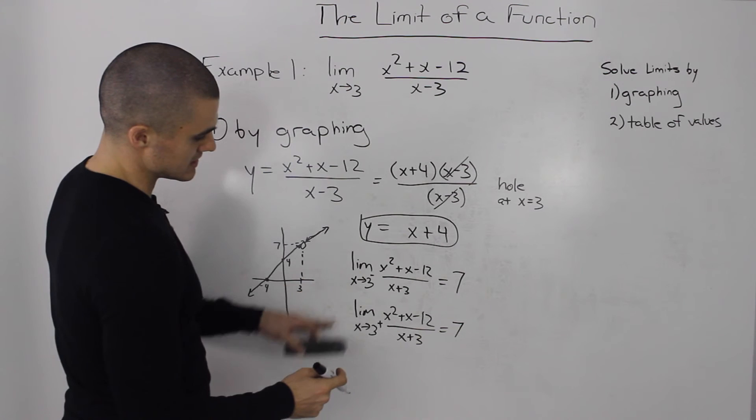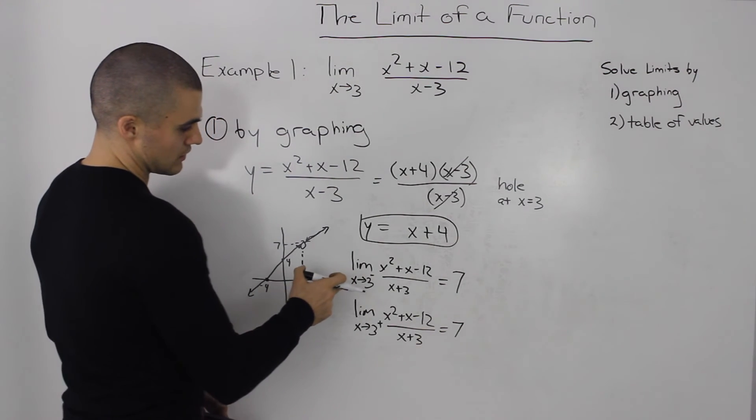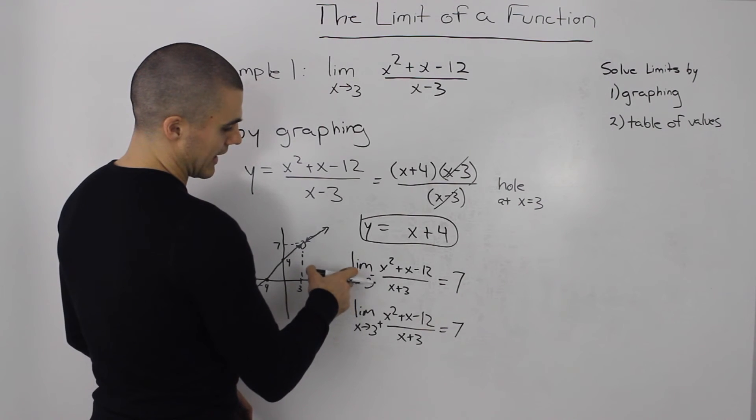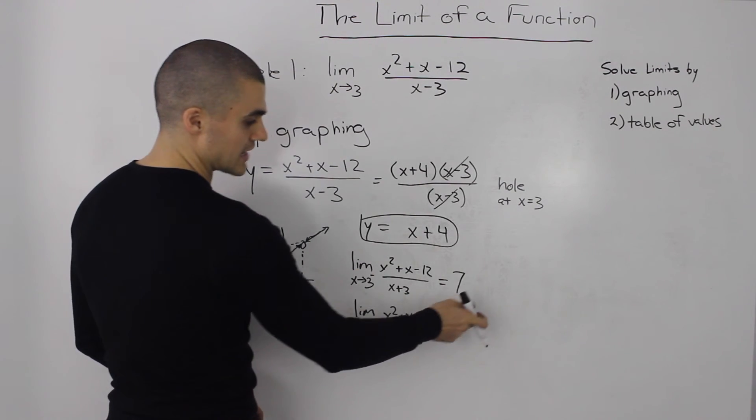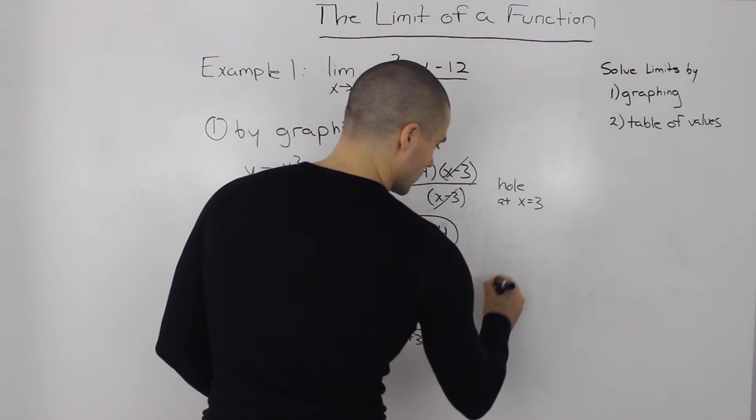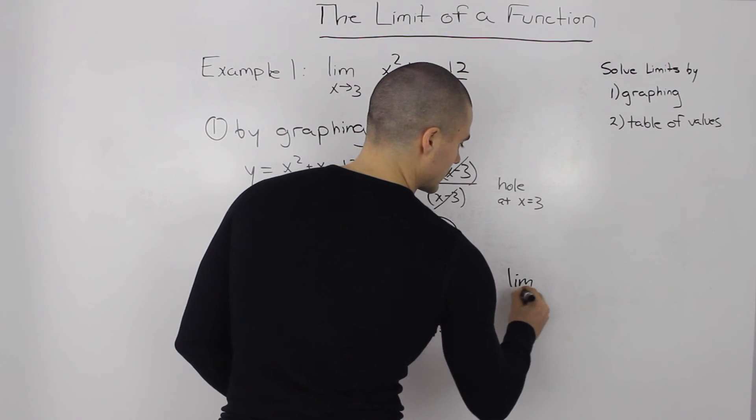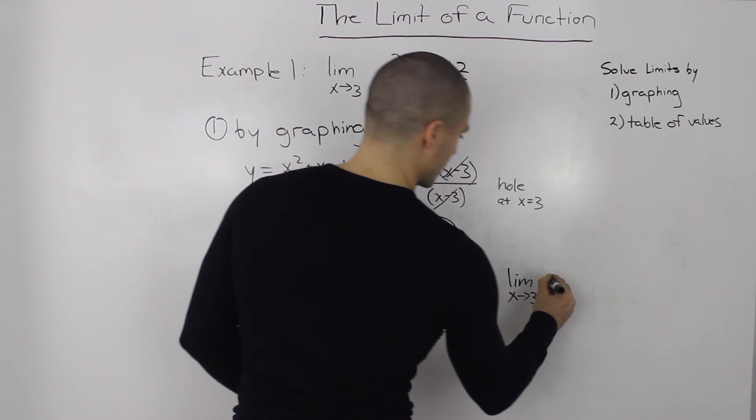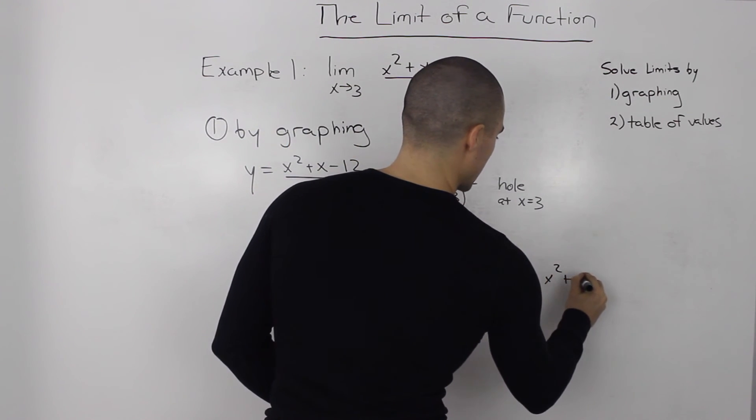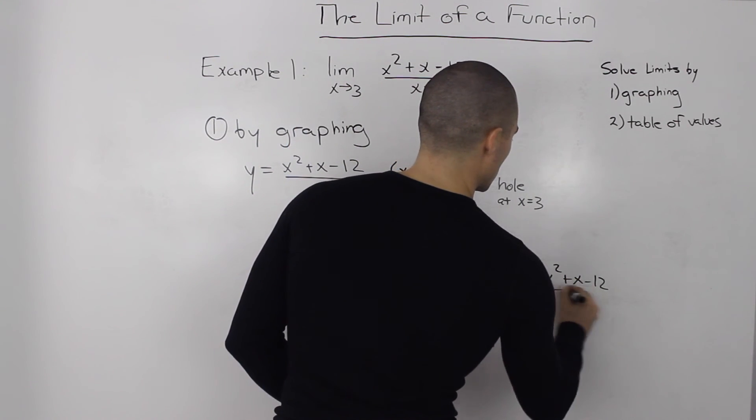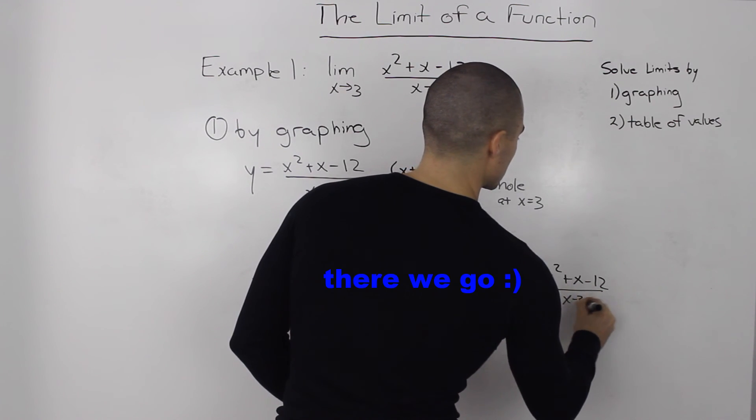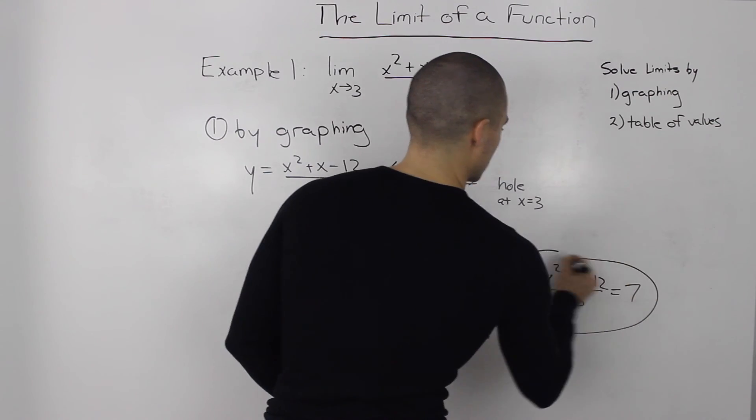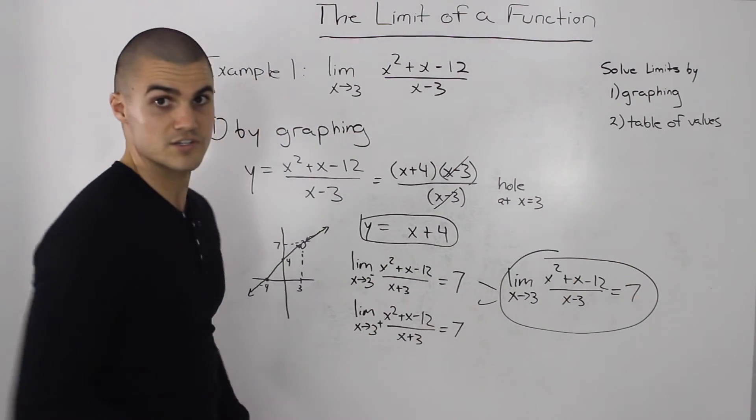Since the limit as x approaches three from both sides is equal to seven, we know then that the general limit—the limit as x goes to three of this function x squared plus x minus twelve over x minus three—is also equal to seven, which is what we wanted to solve.